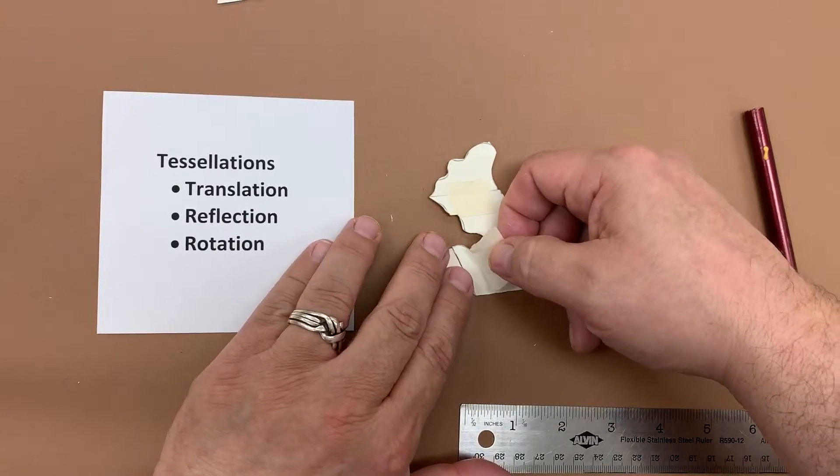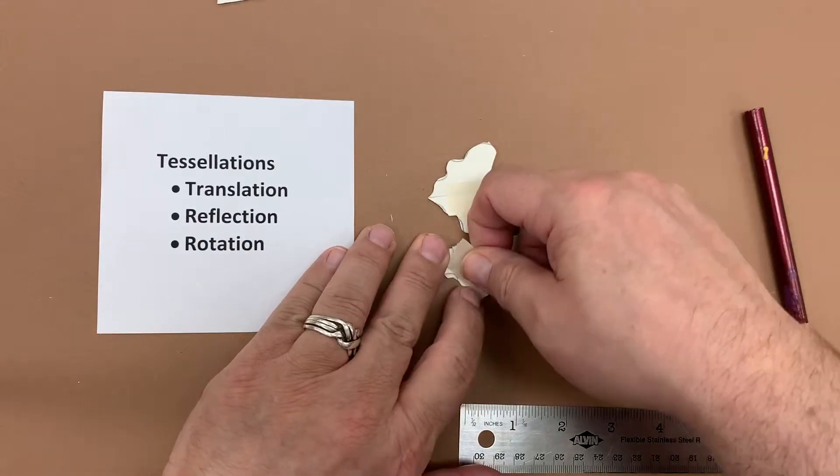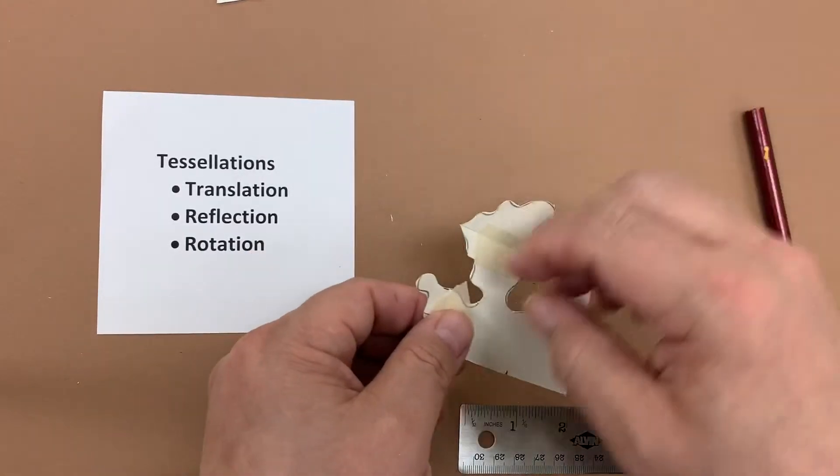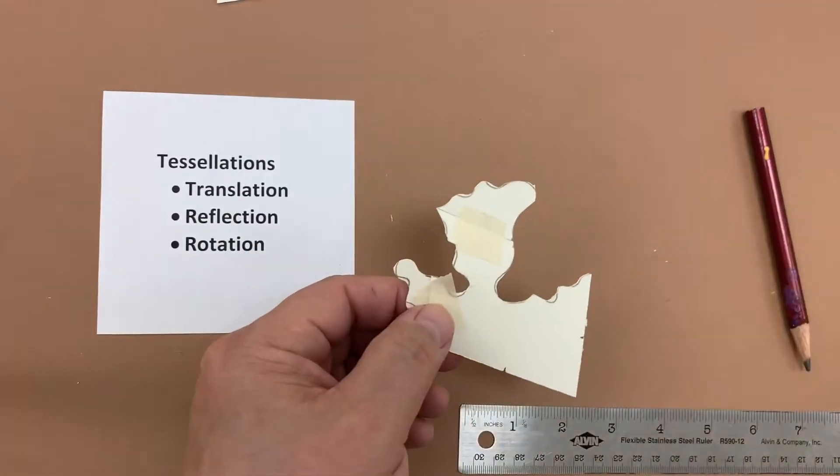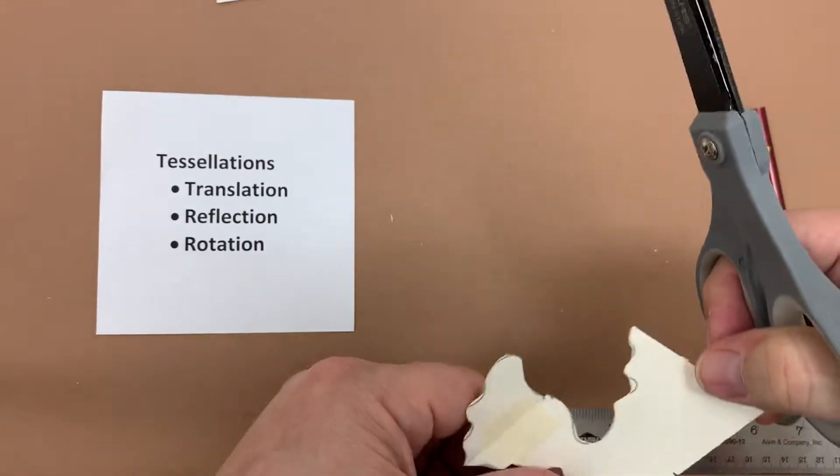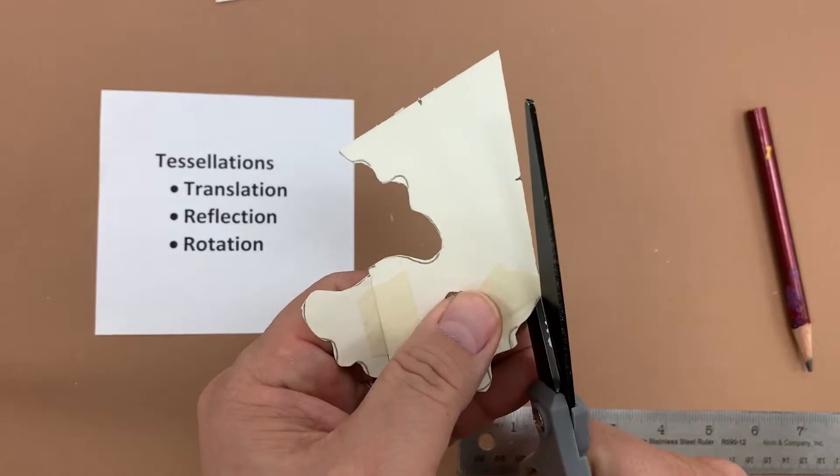Again, making sure there are no gaps and no overlaps. And if the tape goes over the edge, just go ahead and cut off that extra with a scissor if you like. Just making sure that you're not hurting your tessellation at all.